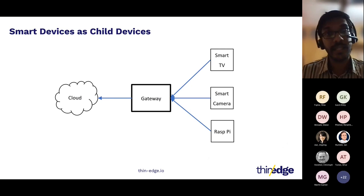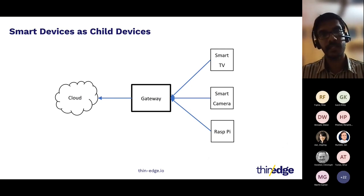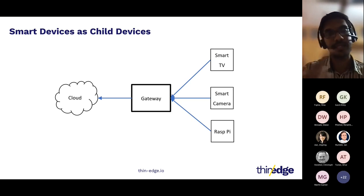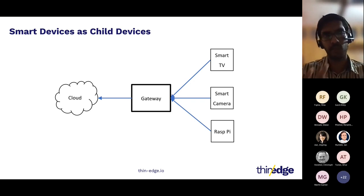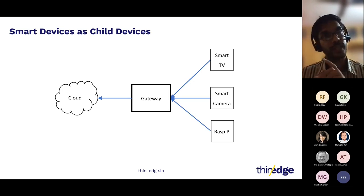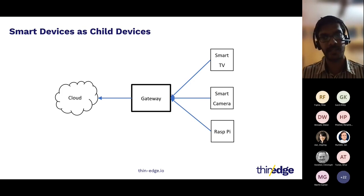The second use case is connecting smart devices like a smart TV, smart cameras, or even devices like Raspberry Pis. These devices are capable of connecting directly to the cloud, but sometimes you wouldn't want to do it. One reason could be security — when you have a fleet of such smart devices, you wouldn't want to connect them all to the cloud directly and expose them all to the Internet and all the risks associated with it.